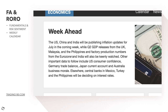The US and China will be publishing inflation updates for July in the coming week, while second quarter GDP releases from the UK are a key focus. Factory production numbers from the eurozone will also be closely watched. Other important data includes US consumer confidence, Germany trade balance, Japan current account, and Australia business morale. The most important news for me will be US inflation and UK Q2 GDP.